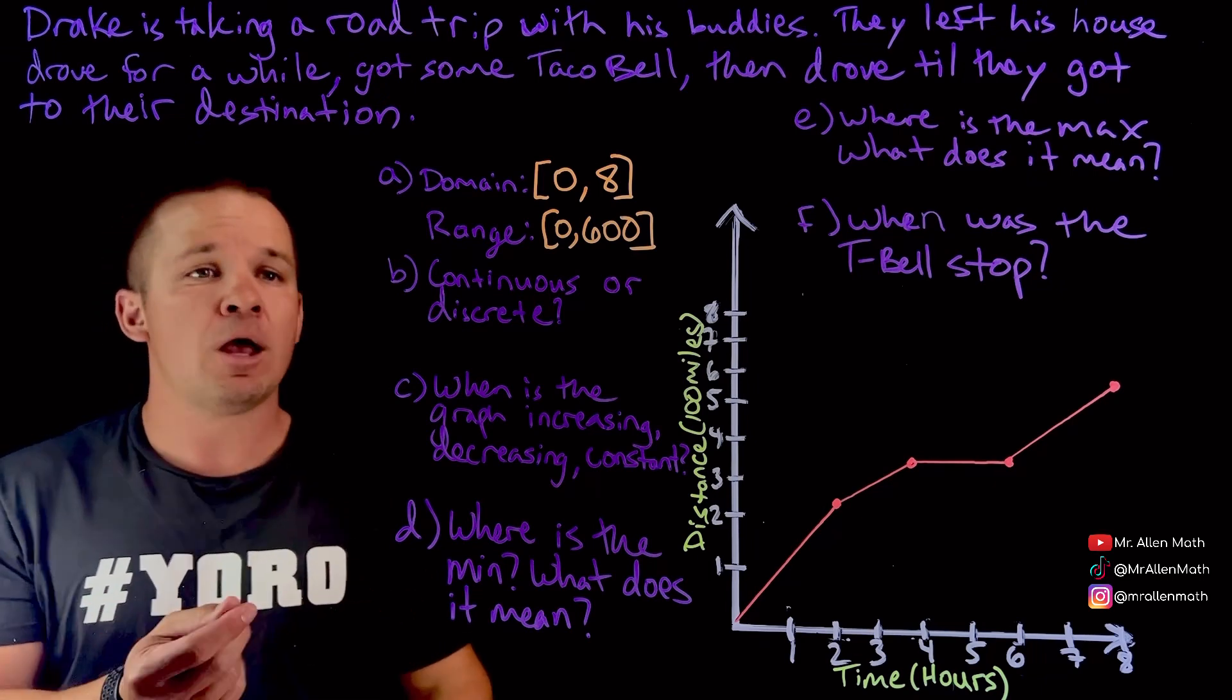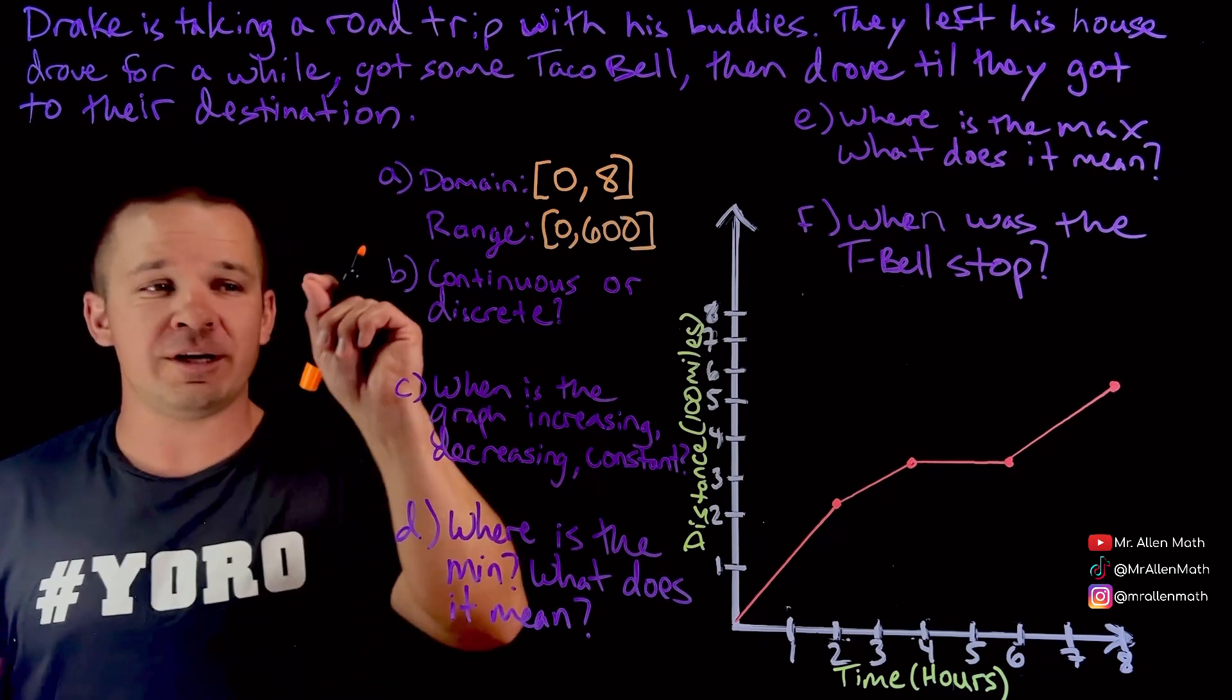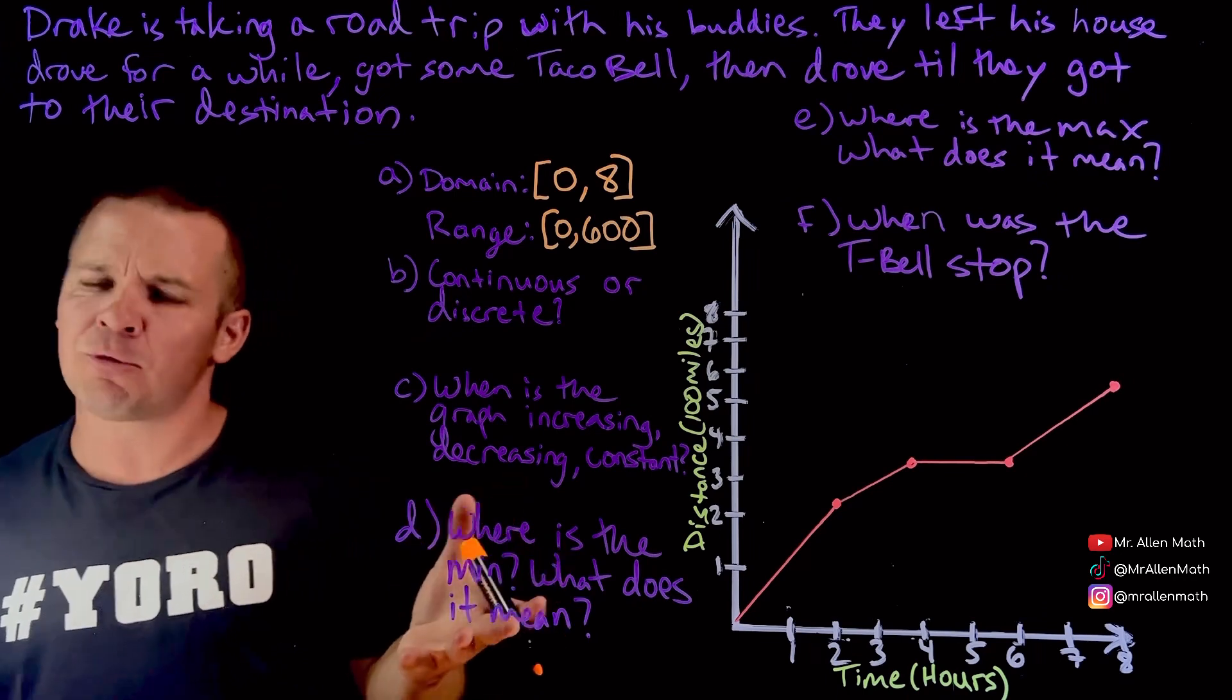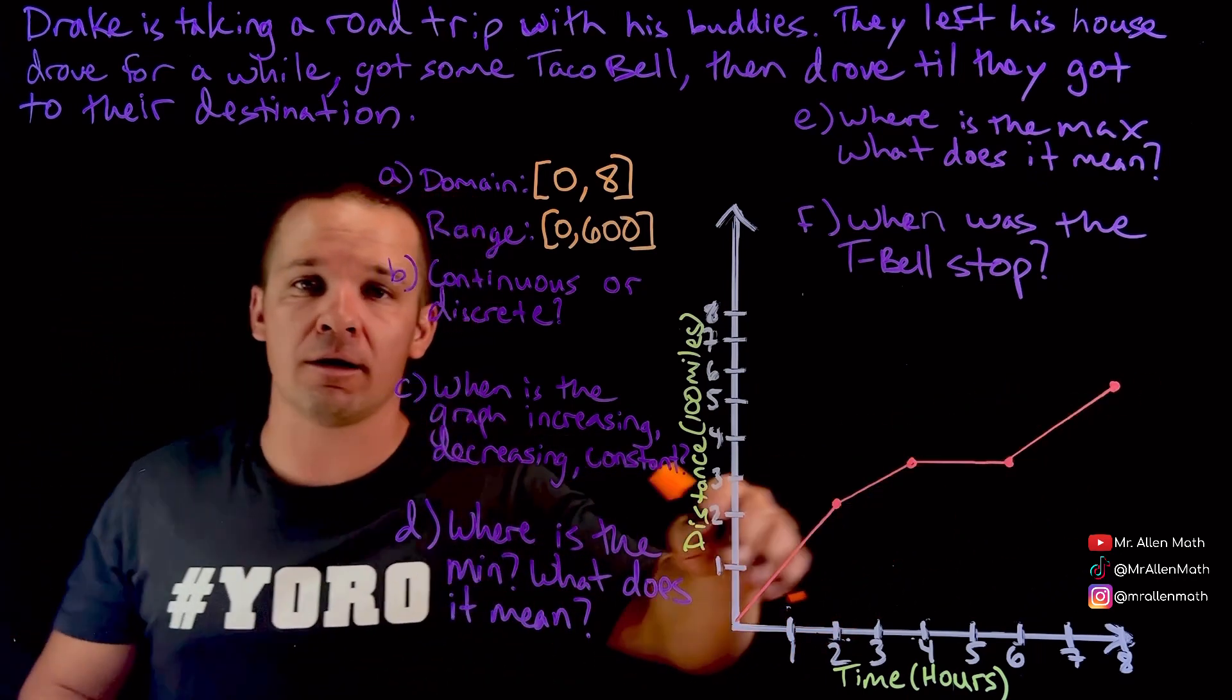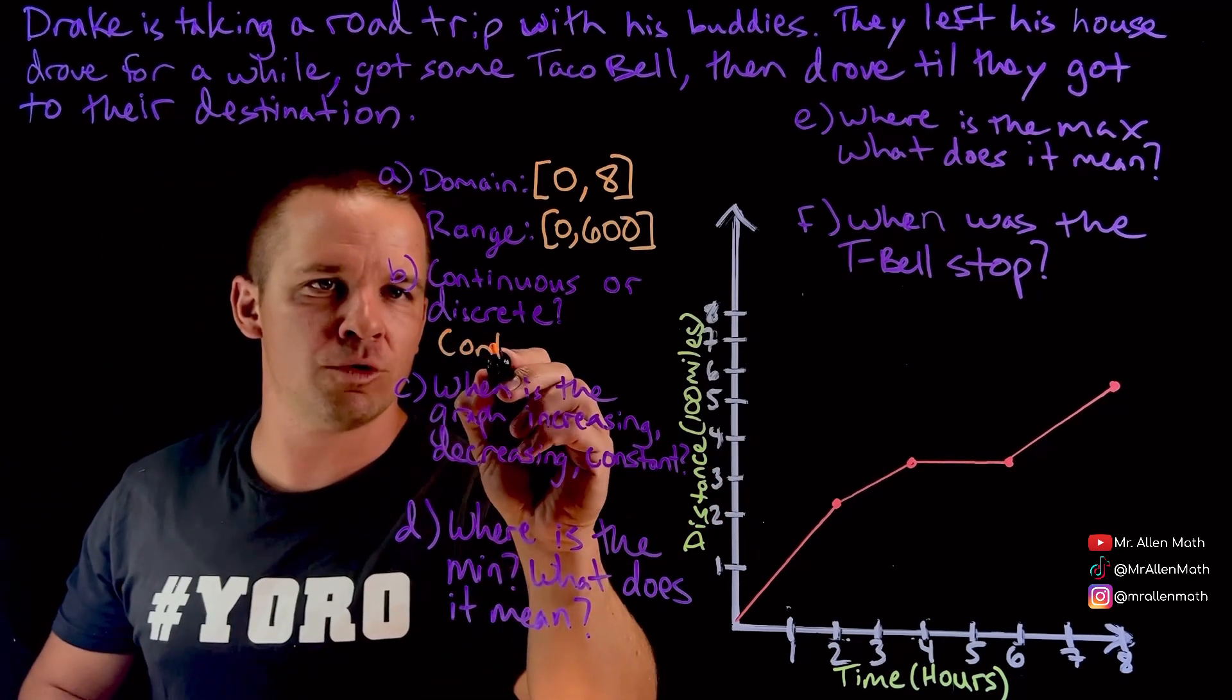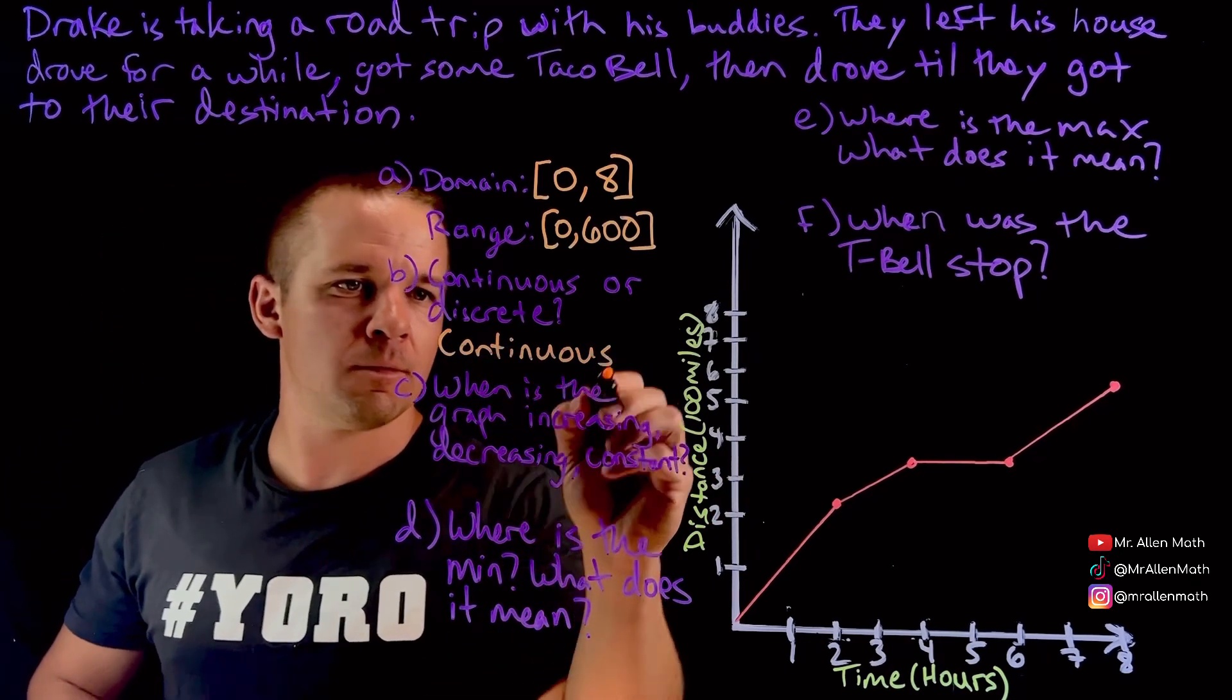Continuous or discrete? Well, what the heck does that mean? Well, discrete, you would just see only specific points. Kind of like a scatterplot, almost like you'd see. Whereas continuous, you're going to see these lines going through here, right? So this one's going to be continuous. Continuous. Beautiful.